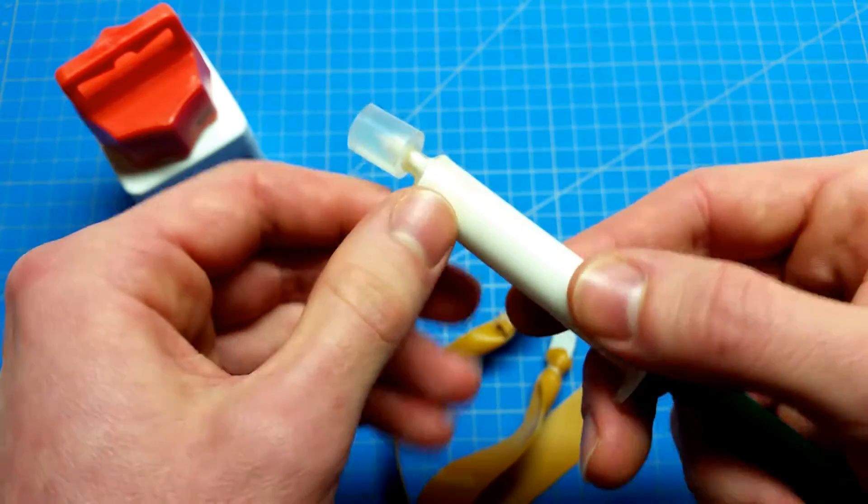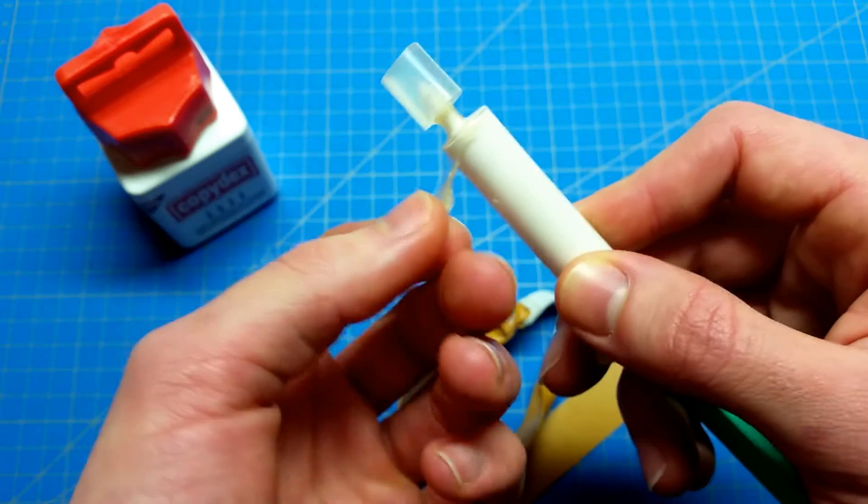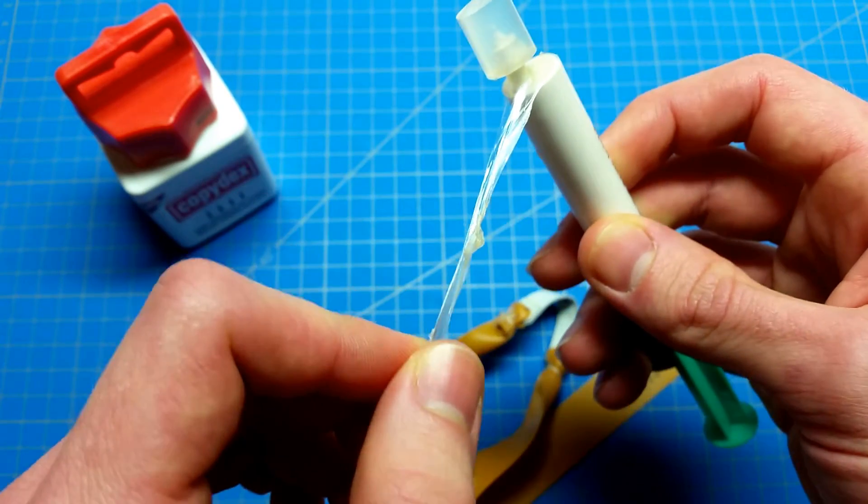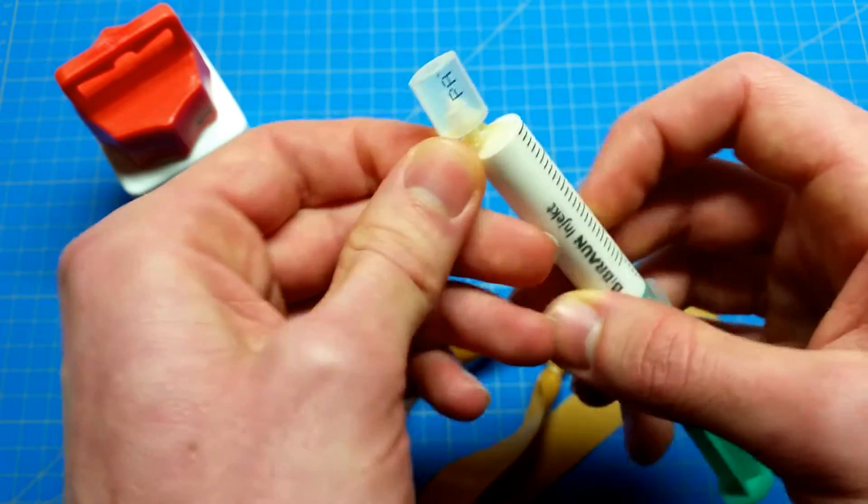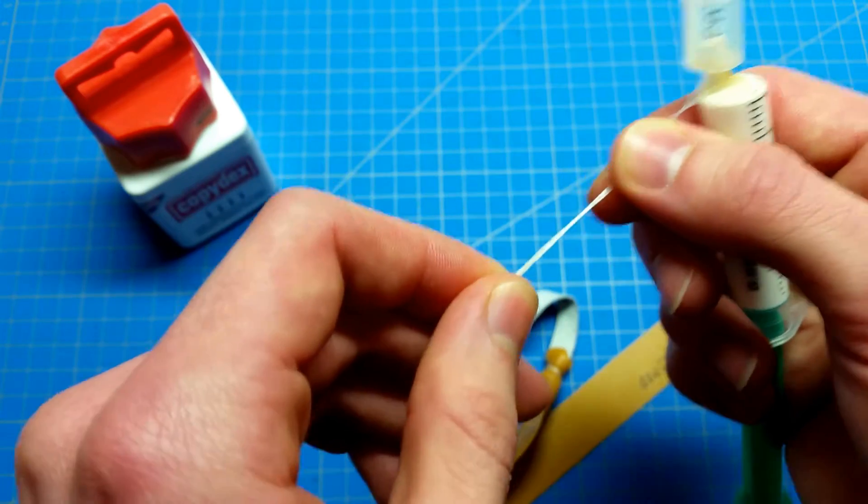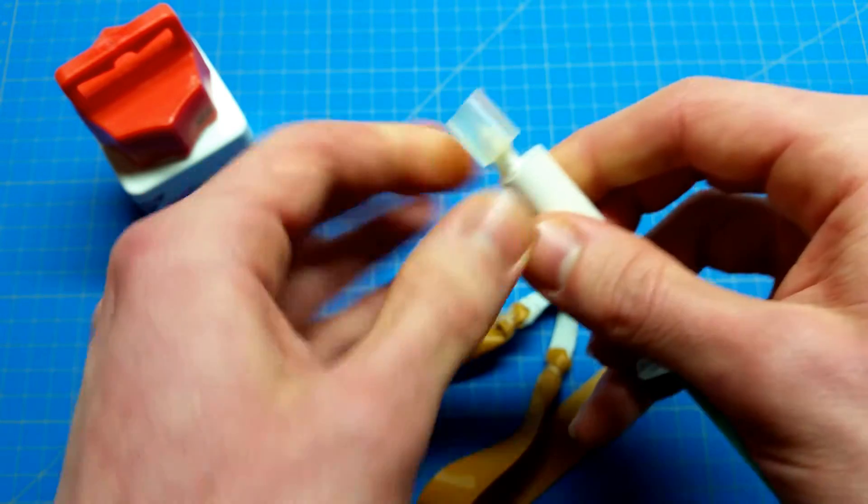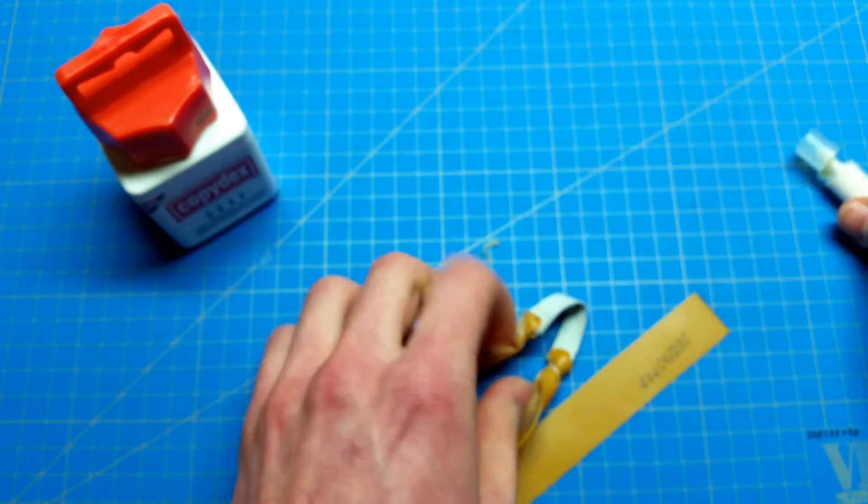Let me show you. Here I have some spilled Copidex. See that? It's just like rubber, really flexible, and it bonds to the rubber quite well. This really helps with band life. I get about 400 shots from this band set with Copidex.